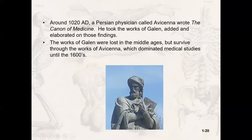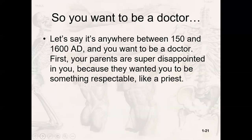Around 1020 AD, Avicenna — a Persian physician — wrote the Canon of Medicine, essentially taking the works of Galen and extrapolating on them. The only reason we know Galen's works exist is because they survived through Avicenna. This was the anatomical book until the 1600s. So from around 150 AD to 1600 AD, if you wanted to be a doctor — and doctor was not the respected career it is now — your medical training would include theology, astrology, and probably some magic.